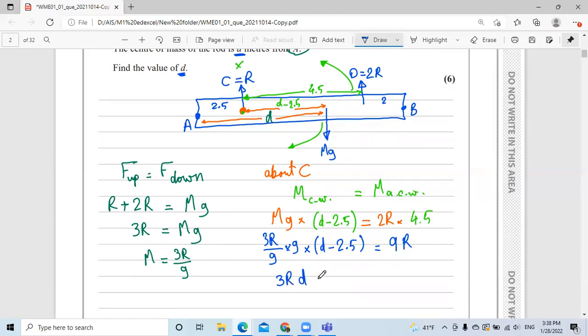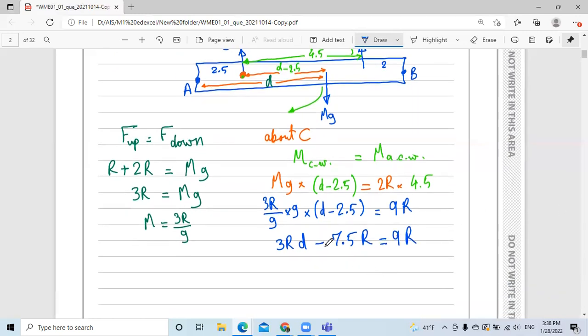Move the 7.5 to the other side, it will be 16.5R. 7.5 plus 9 is 16.5, equals 3RD. D equals 16.5 over 3, which is 5.5 meters.